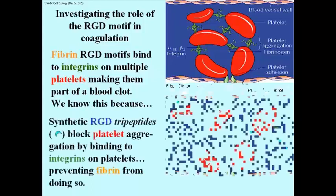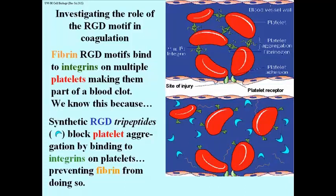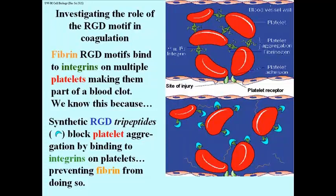We can make synthetic RGD tripeptides—just a 3-amino acid polypeptide, illustrated here as a crescent moon. If you mix those synthetic tripeptides with platelets, the tripeptides will recognize and bind to the integrin. The result is that these platelets are blocked from attaching to one another. They can no longer attach to the fibrin or fibrinogen molecules, which you can see floating around in the blood here, unattached to the platelet.